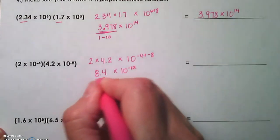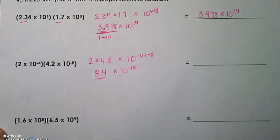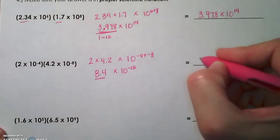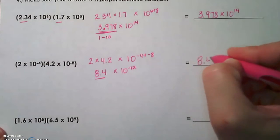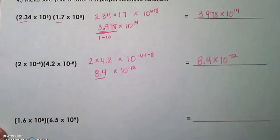Again, double-check that factor. Make sure it's a value between 1 and 10. Again, 8.4 is greater than 1 and less than 10, so our number is in proper scientific notation. There we go: 8.4 times 10 to the negative 12. Let's take a look at the next.